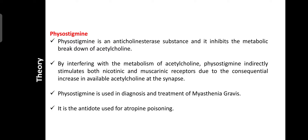Physostigmine is used in the diagnosis and treatment of myasthenia gravis, which is an autoimmune disorder. In myasthenia gravis, due to decreased acetylcholine levels at synaptic junctions, the muscles are unable to contract. This is treated with the administration of physostigmine. Physostigmine is also used as an antidote for the treatment of atropine poisoning.